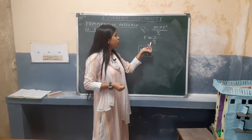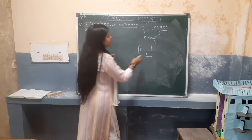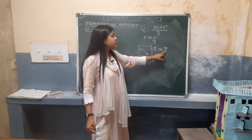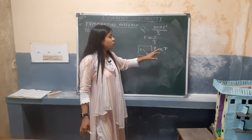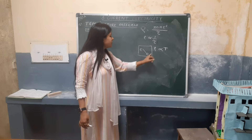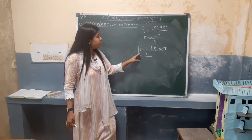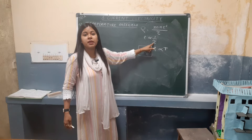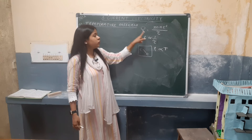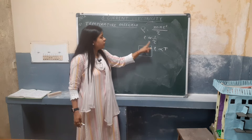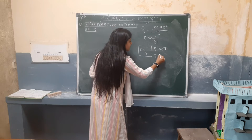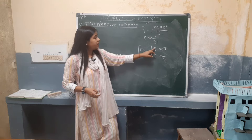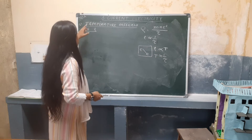Resistivity depends on temperature. When we increase the temperature of a given conductor, the electrons move very fast. When they move faster, their relaxation time decreases. When relaxation time decreases, resistivity increases. So temperature is inversely proportional to relaxation time. From both these concepts we understand that resistivity depends on temperature.